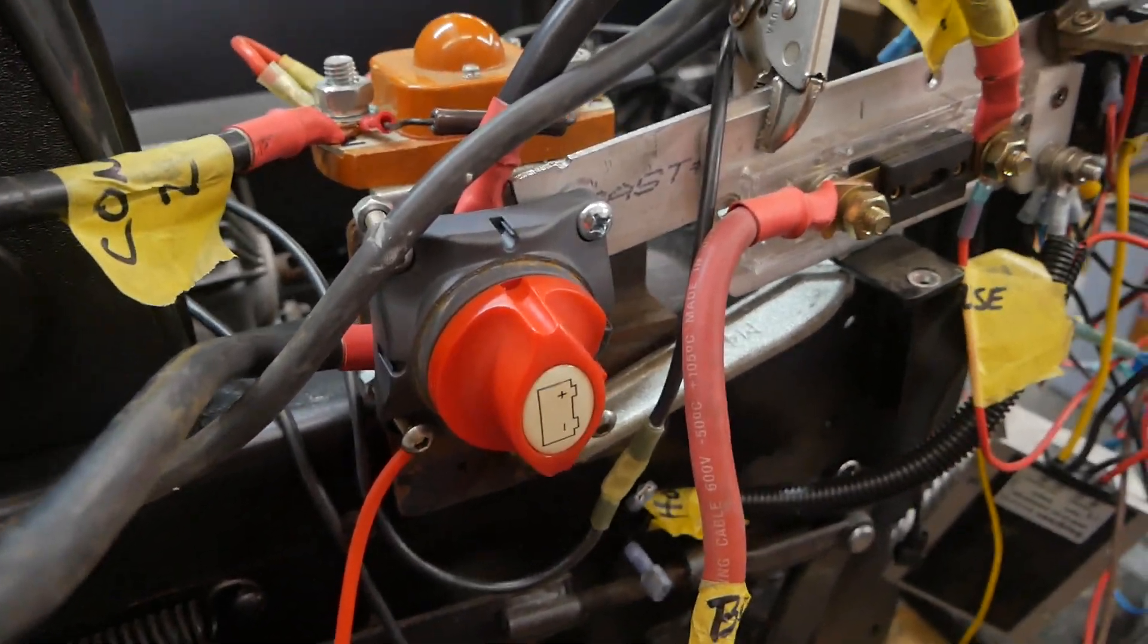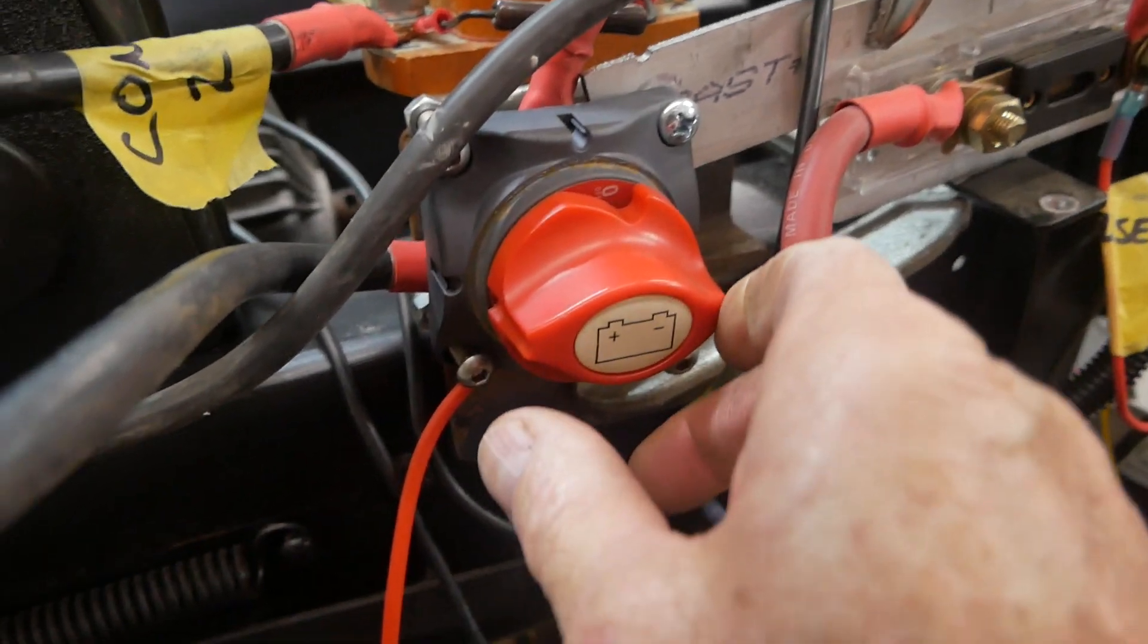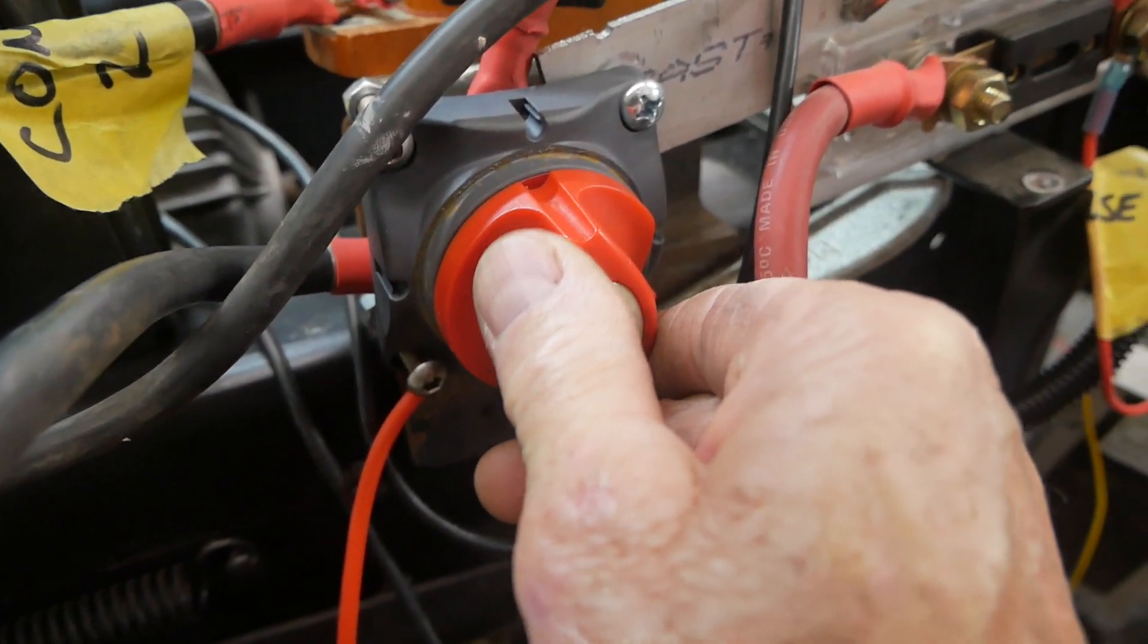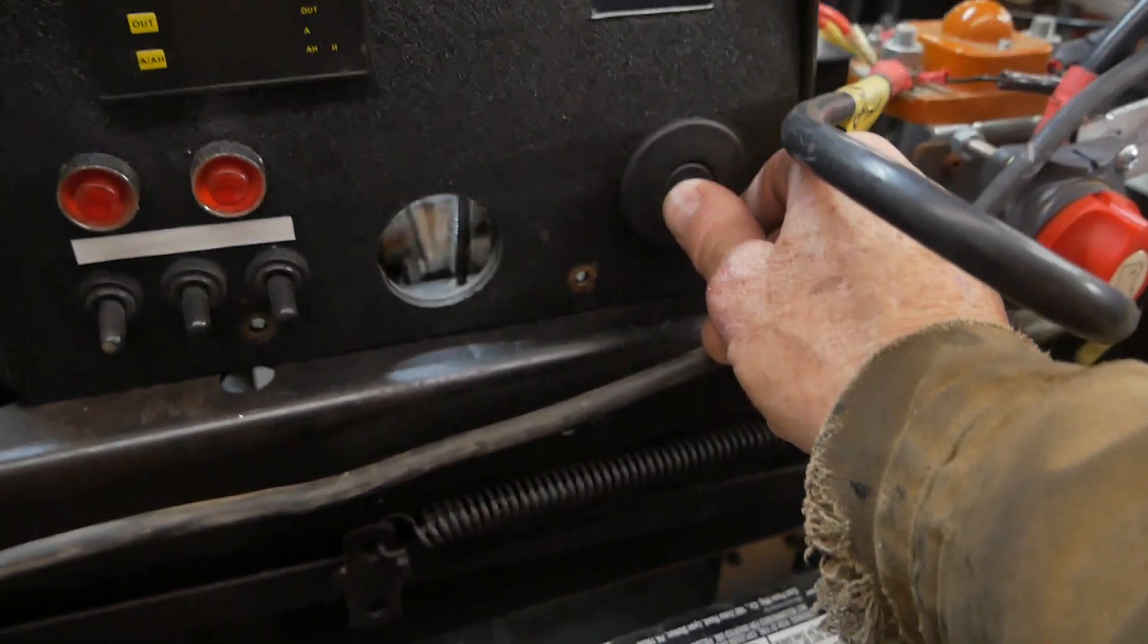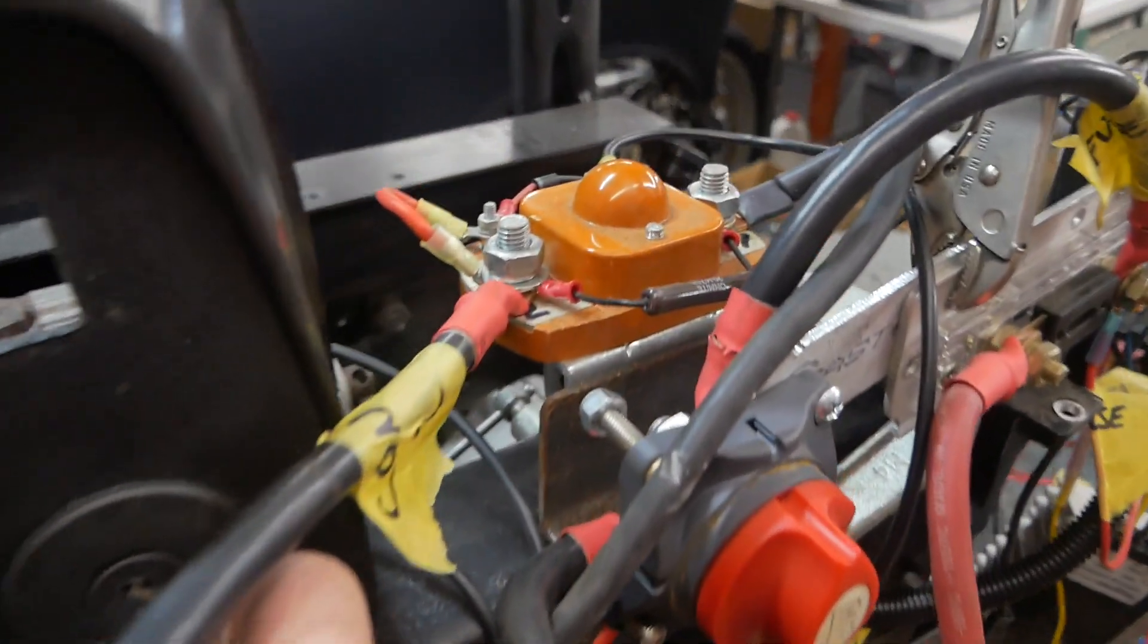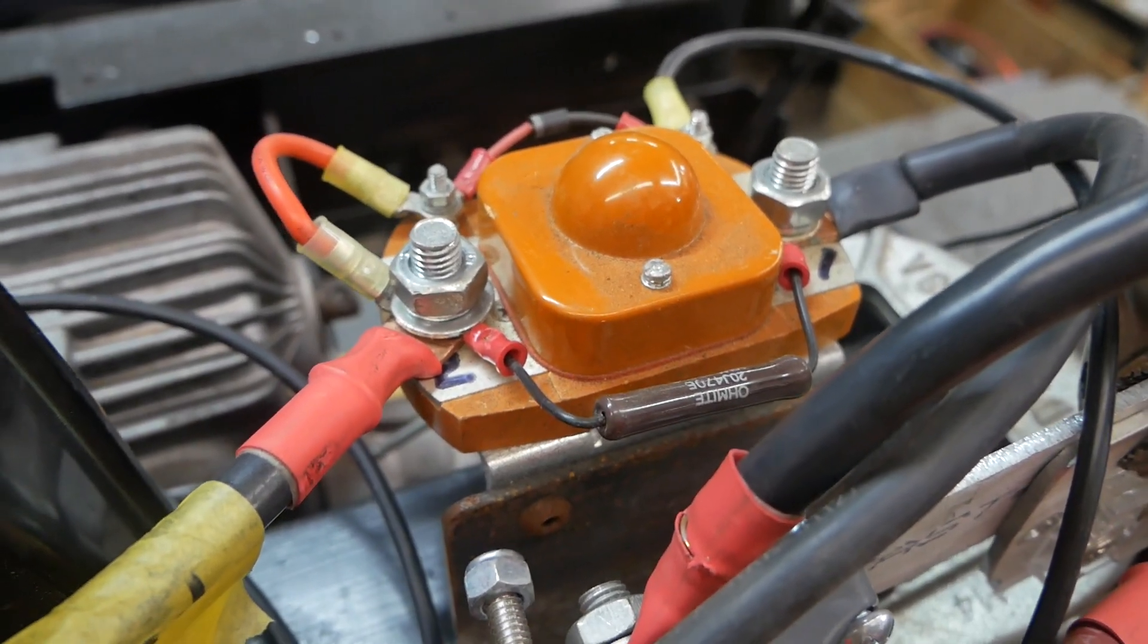This is my dead man switch. If it goes to hell, I can just kill everything with this switch here. So let's turn that on, and then let's turn on the motor. This is the contactor, which actually does the connection of the motor to the batteries.